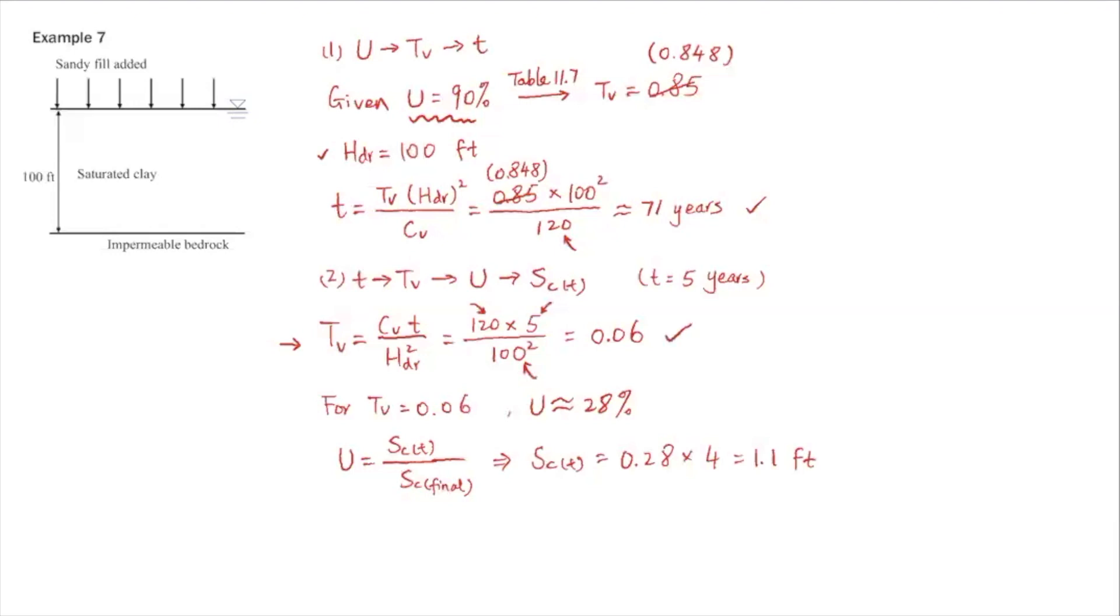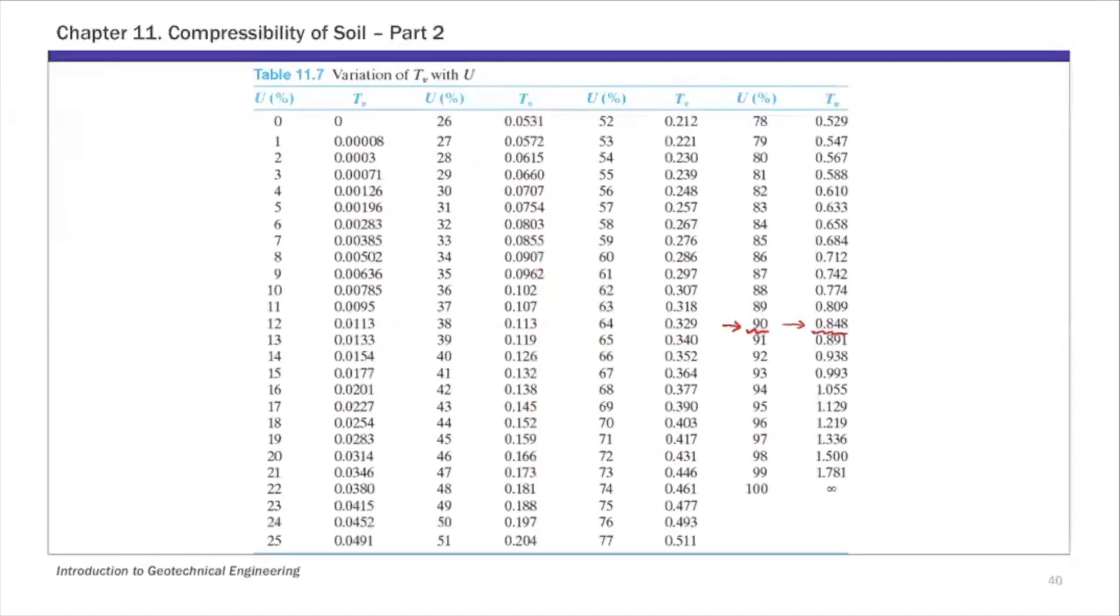That's the time factor, and we're going to use Table 11.7 again. For Tv of 0.06, let me show Table 11.7. We have 0.06.